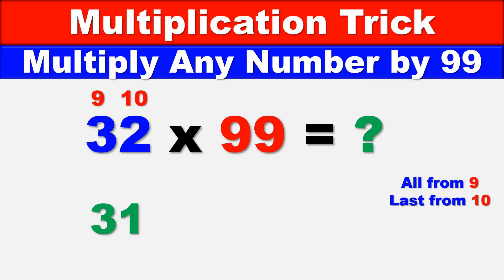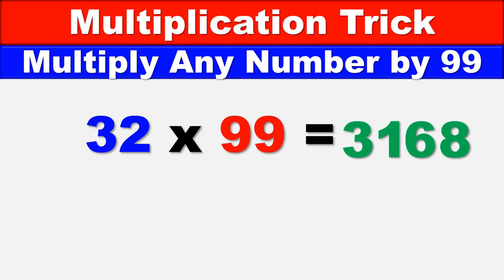...which is 6, and then we go to 10 minus 2, which is 8. We do 10 minus 2 because 2 is the last digit - all from 9 but the last from 10. So we result in 68 for the last part, which means that 32 times 99 is 3168.